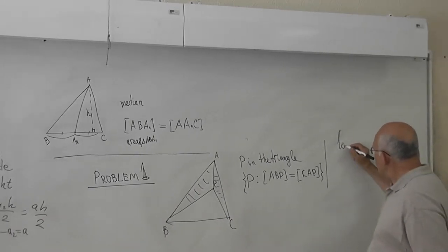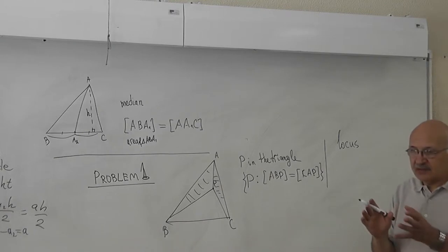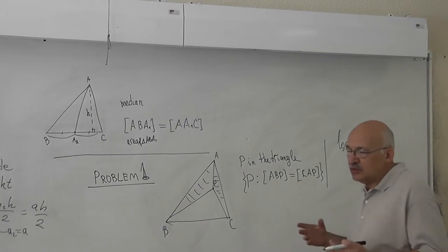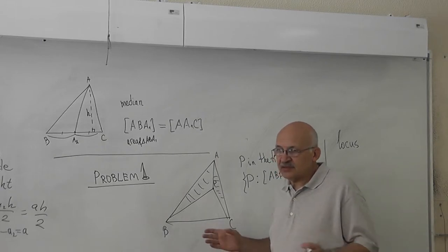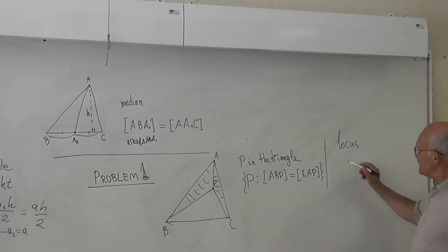Locus. In Russia, we often say 'geometricheskaya myeska tochka.' Have you heard this? So if some set is defined by a geometric condition, we usually use this term. But in English, we have this short word of four letters: locus, which means geometricheskaya myeska tochka.